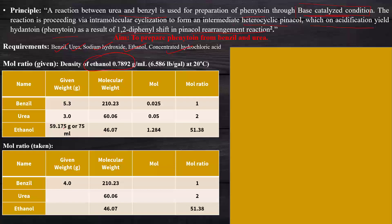So if you use benzil at 1 mole, then you take 2 moles of urea and 51.38 moles of ethanol for the reaction. Here we start the reaction with 4 grams of benzil. We need to determine how many moles and how many grams of each reagent to use. I will label the values A, B, C, D, etc., for easy identification.